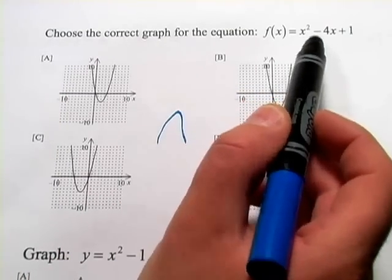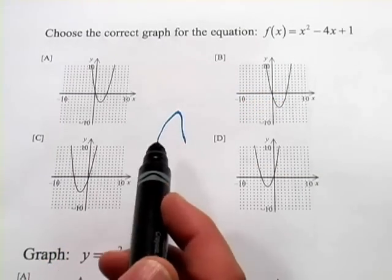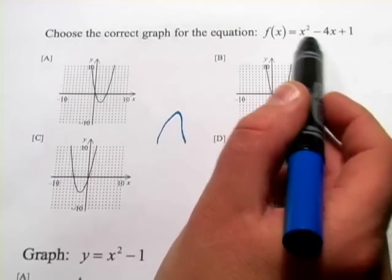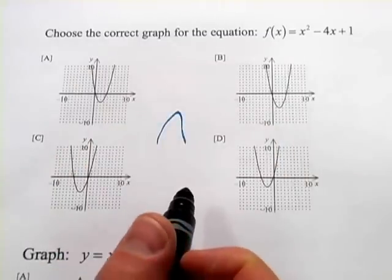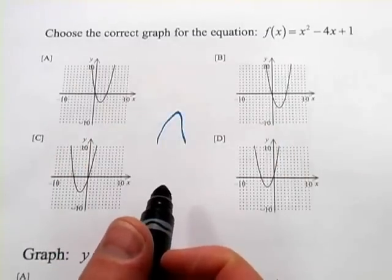Now, to match an equation to a graph, you could just start picking points, plug in values for X, crank out values for Y, and see if they match what's on the graph. That actually is a foolproof way of doing it, although it takes a fair amount of work.